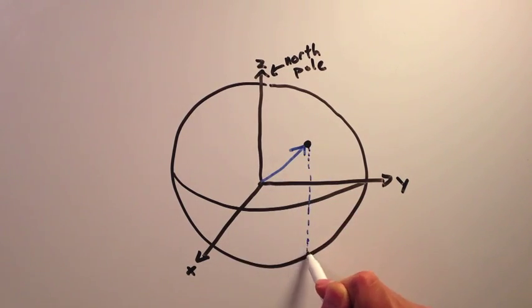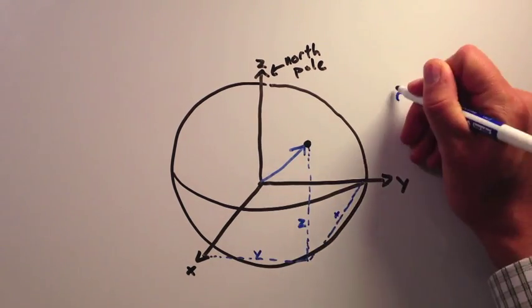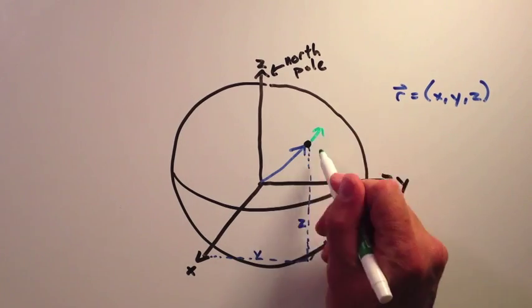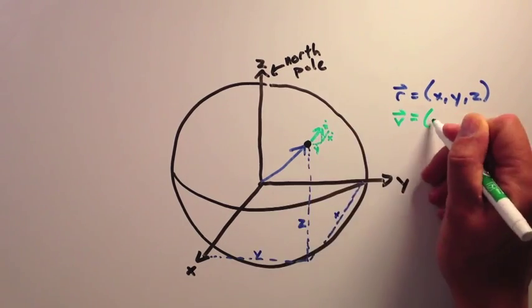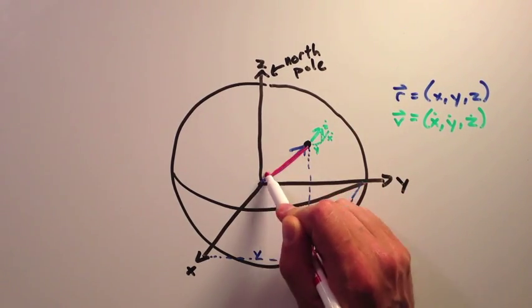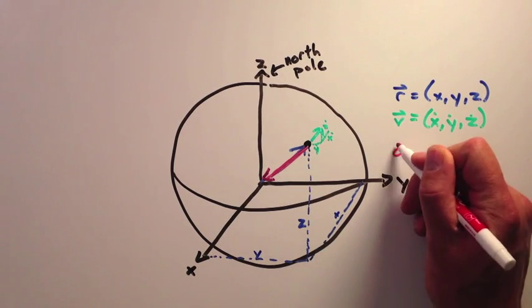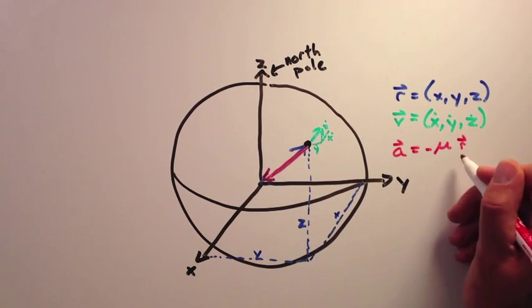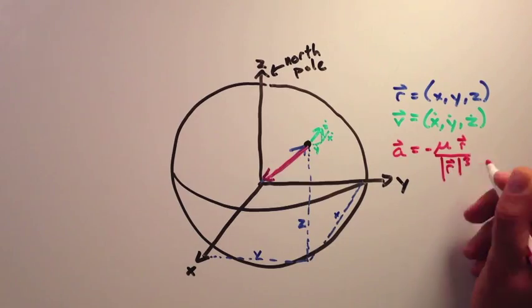In order to describe the Cartesian ephemeris for a satellite, you will need to know the x, y, and z position, as well as the x, y, and z velocity. Just like the cannonball example, you don't need to record the acceleration due to gravity. This can be calculated using the position of the satellite.